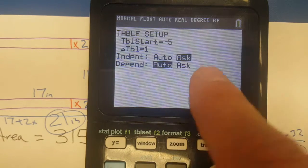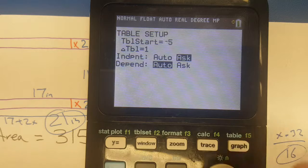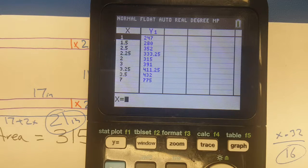Now make sure your table set is ask. You want to ask the independent, that's you put it in, and then it automatically gives you the dependent. You put in the x values and the y values come out.